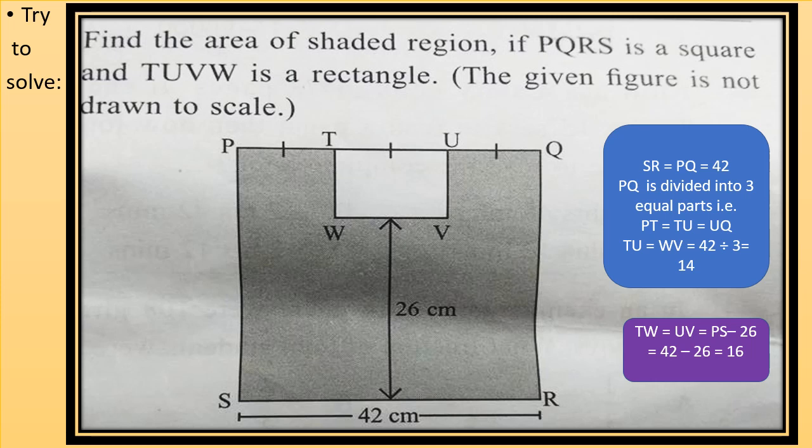So area will be length into breadth. So TU is 14 into 16. So we can calculate the area. Now after calculating the area of square and rectangle we can subtract and get the area of shaded region.